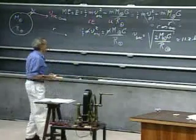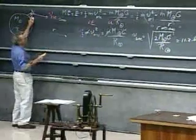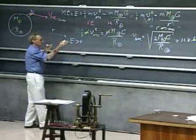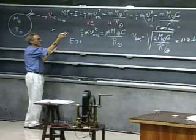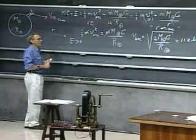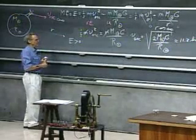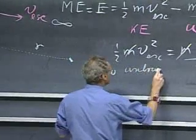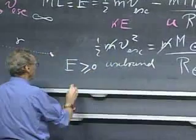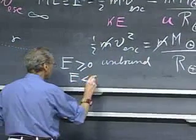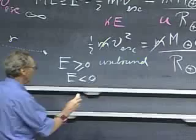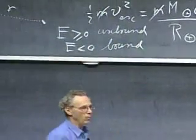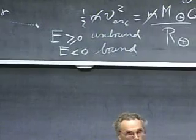If the total energy when you leave the Earth with that velocity is larger than zero, you do better than that. You reach infinity with kinetic energy which is a little larger than zero. We call this unbound orbits. If E is smaller than zero, that the total energy that you have is negative, then you will never escape the gravitational pull of the Earth, and you will be in what we call a bound orbit.